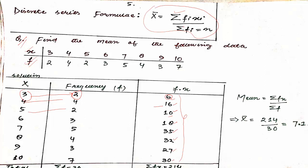In the denominator, we have to take the sum of all the frequencies. So whatever frequencies are given — 2 plus 4 plus 2 plus 3 plus 5 plus 4 plus 3 plus 7 — that comes to 30. Now applying the formula: mean equals summation of f into x divided by summation of f, that is 214 divided by 30.